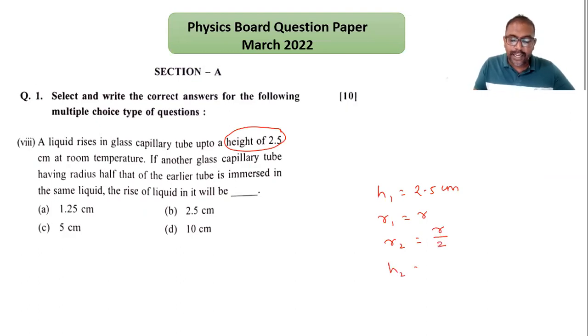We have to find out the height. Remember, height multiplied by radius is always constant. So h1r1 equals h2r2, and we need to find h2. Therefore h2 equals h1r1 divided by r2.